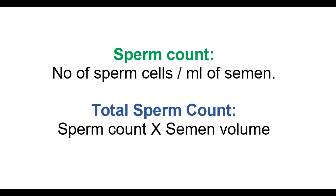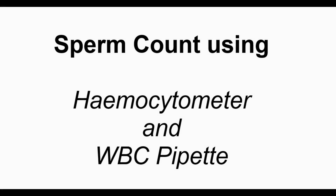Sperm count is the number of sperm cells found in 1 ml of semen. Total sperm count is the total number of sperm cells found in the total volume of semen obtained in a single ejaculation event, that is sperm count multiplied by semen volume.